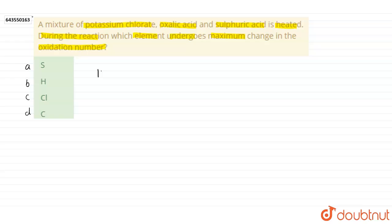We write the reaction here. KClO3 is potassium chlorate, H2C2O4 is oxalic acid and H2SO4 is sulfuric acid and all are heated. We get KCl as product number 1.